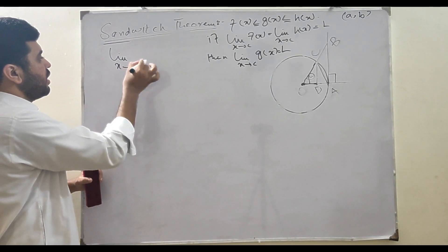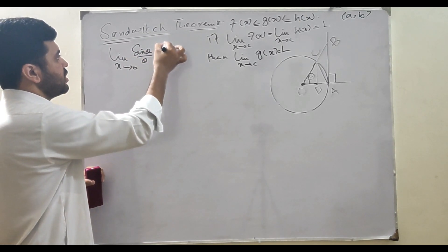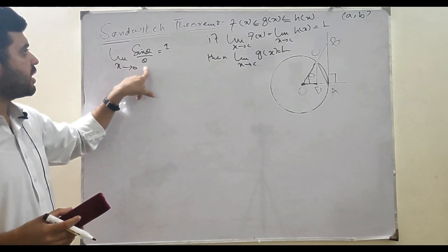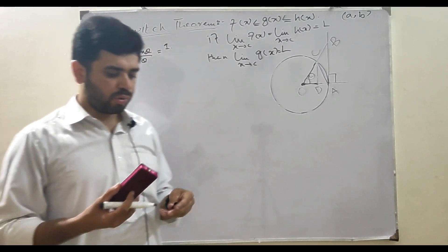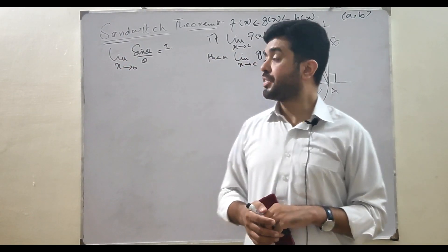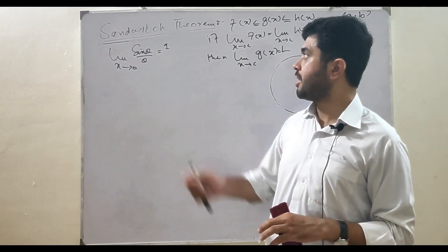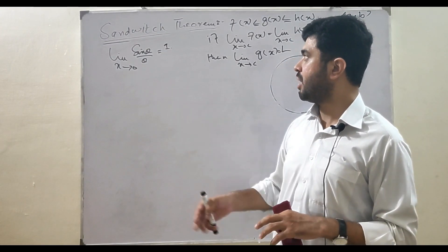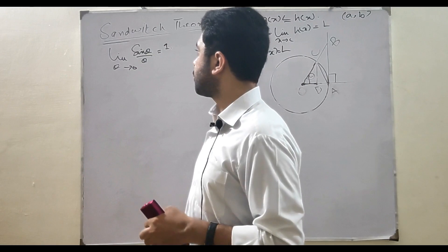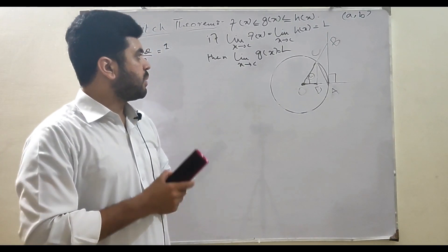Let's prove that the limit as θ approaches 0 of sin θ / θ equals 1, using the Sandwich Theorem. There are some problems which cannot be solved by algebraic techniques, so we use geometric techniques to solve them. Here, θ approaches 0, not x.